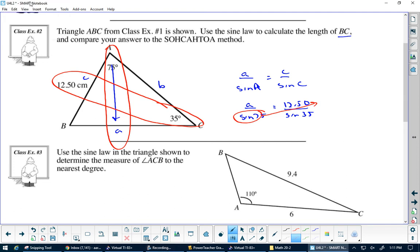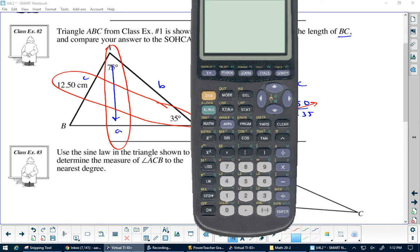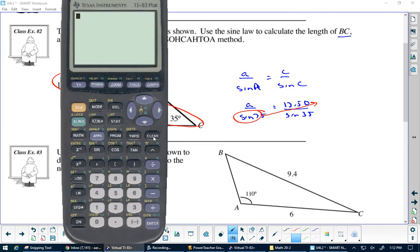Let me show you how to put that into your calculator. You go 12.5, and it's nice to put your top in brackets: 12.50 times sine 75, and then I'm going to shut my bracket. See how I shut my bracket for my angle? And then I'm shutting my bracket for the top divided by sine 35. We hit that and we get 21.05 centimeters.